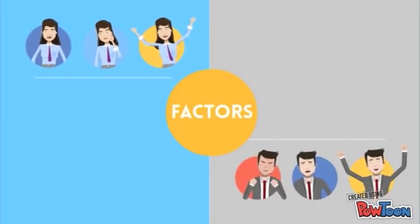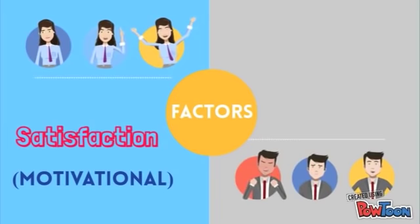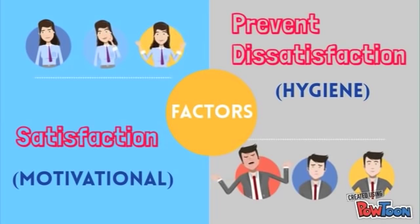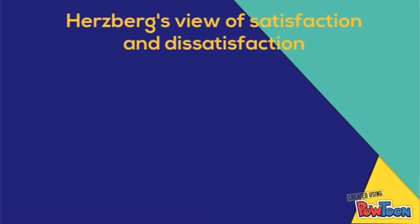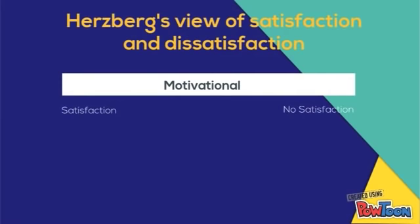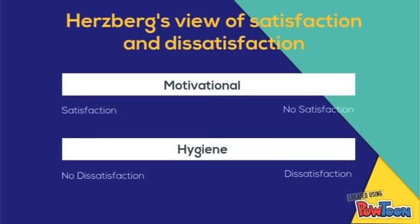According to Herzberg, there are some job factors that result in satisfaction, which are motivational factors, while there are other job factors that prevent dissatisfaction, which is the hygiene factor. Based on Herzberg's view, the opposite of satisfaction is no satisfaction, and the opposite of no dissatisfaction is dissatisfaction.